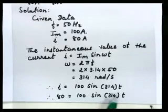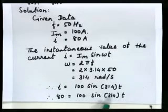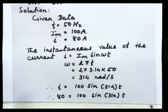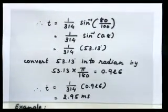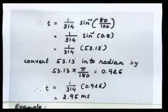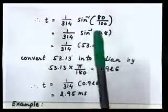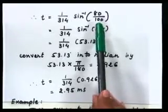The instantaneous equation of current is equal to 100 sin(ωt). This indicates the instantaneous value changes according to time. To find the value of time, t is equal to (1/314) sin⁻¹(i/im), where i is the instantaneous value of current and im is the maximum current, which is 100 as given in the data.